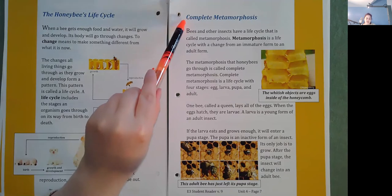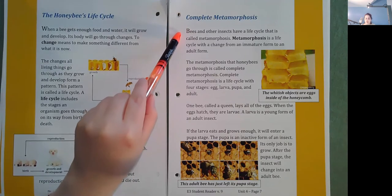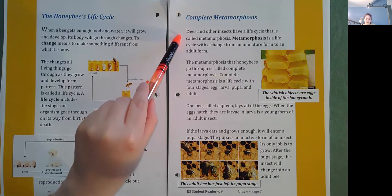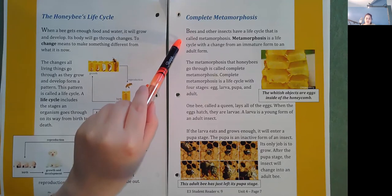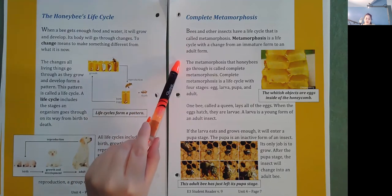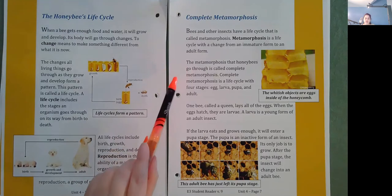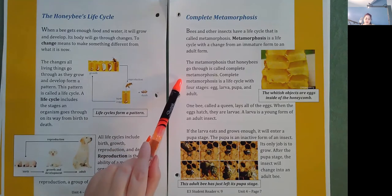Complete metamorphosis. Bees and other insects have a life cycle that is called metamorphosis. Metamorphosis is a life cycle with a change from an immature form to an adult form. The metamorphosis that honey bees go through is called complete metamorphosis. Complete metamorphosis is a life cycle with four stages.